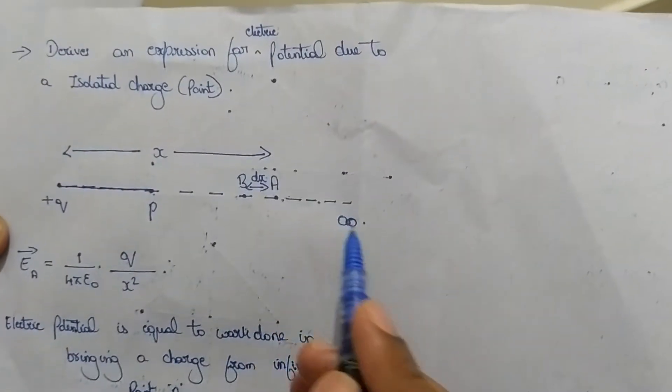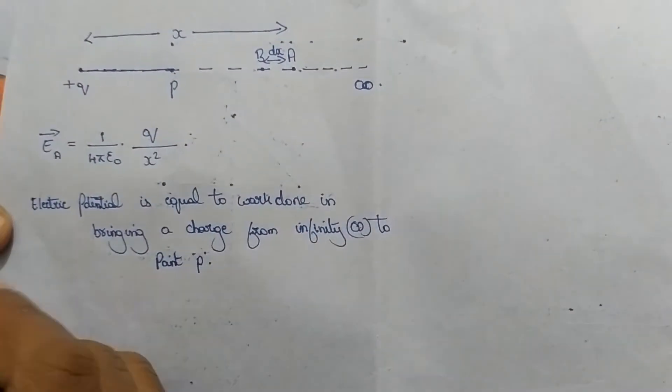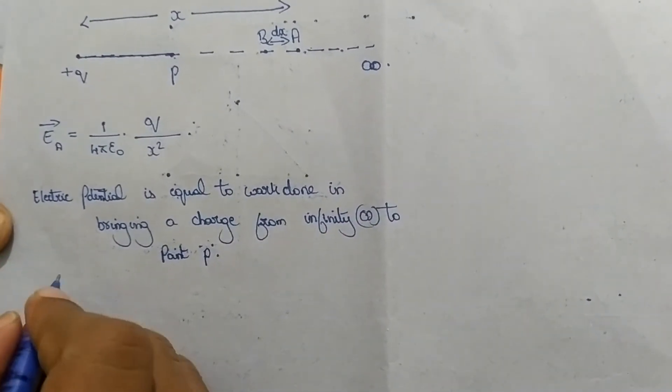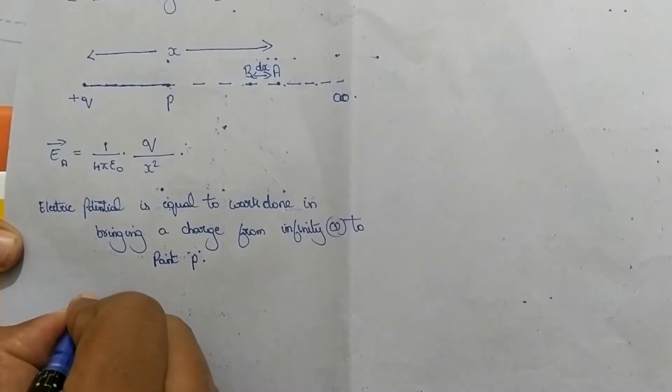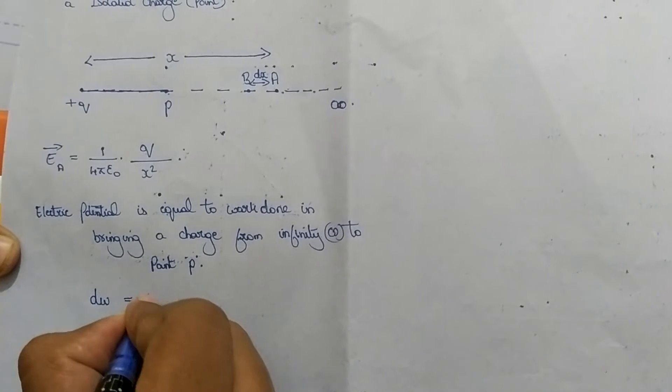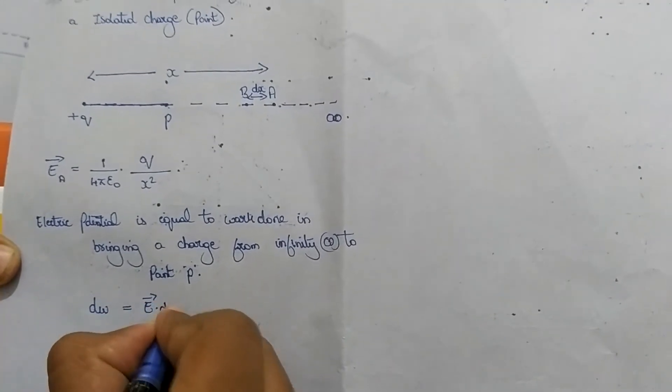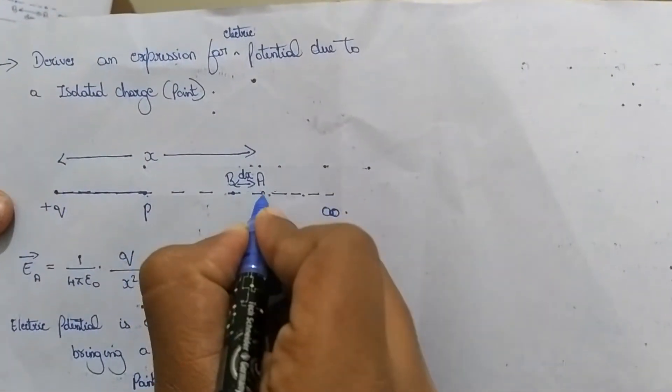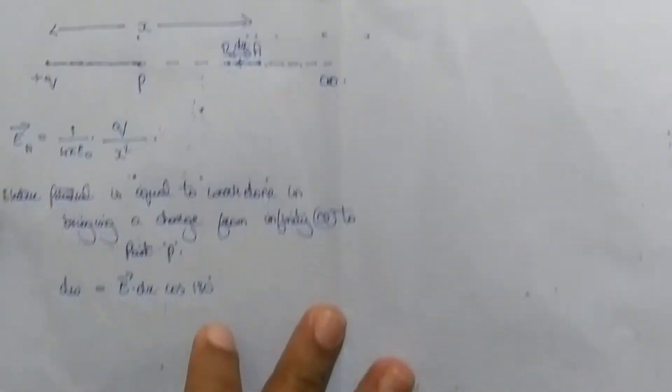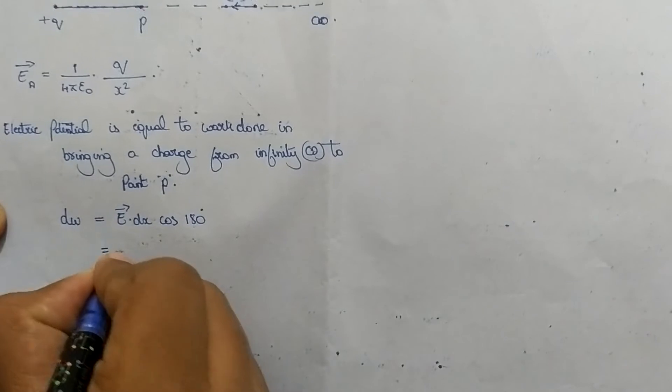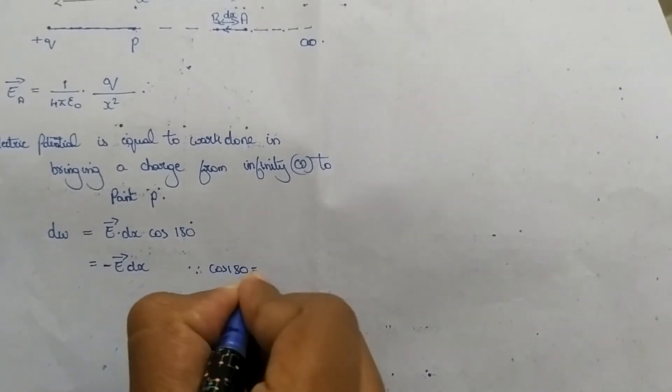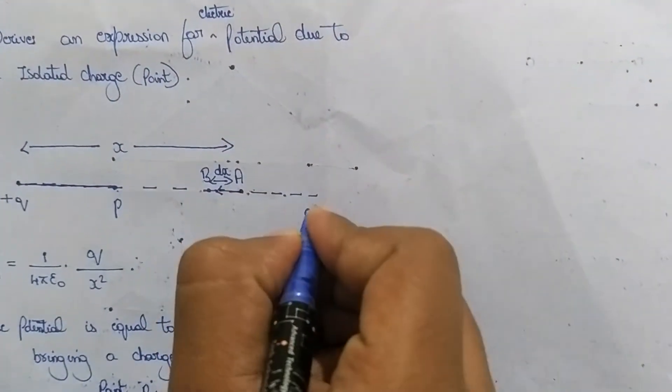Work done for a segment A and B is given by dW equals E dx cos 180°. Here 180° is taken because the direction is in opposite direction. Hence this equation reduces to -E dx because cos 180° is equal to -1.